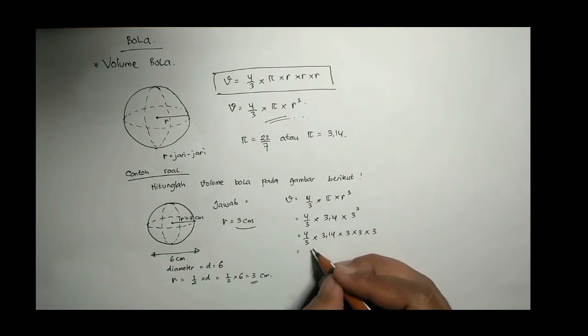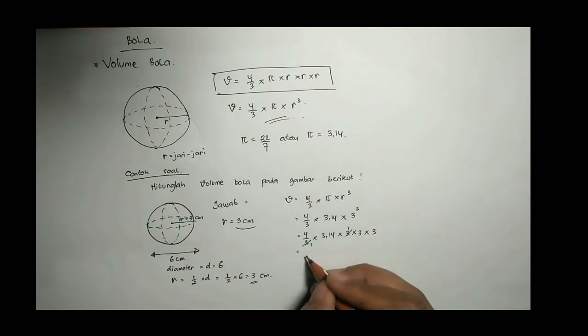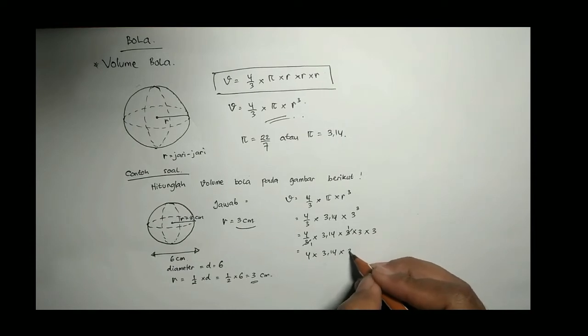3 di bawah 4/3 ini ya bisa disederhanakan dengan 3 di atas. Bagi 3, 1. Bagi 3, 1. Sehingga hasilnya lebih sederhana 4 kali 3,14 kali 3 kali 3.